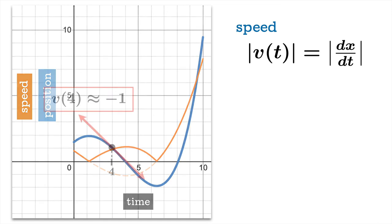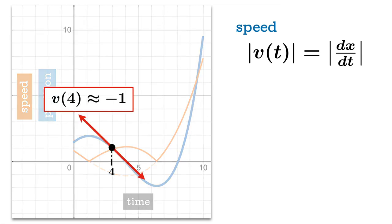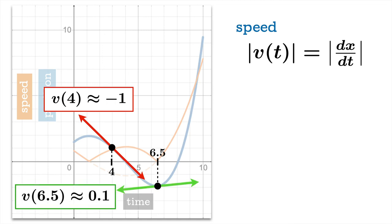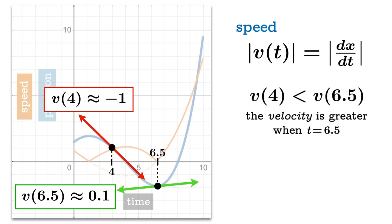Let's look at an example. So at time 4 we can use the methods we looked at previously to estimate that this instantaneous velocity is about negative 1. And we'll look at another moment here, time 6.5, and we can see that the velocity here is about 0.1. Now negative 1 is less than 0.1, so the velocity at time 4 is less than the velocity at time 6.5. So the velocity is greater when t equals 6.5.